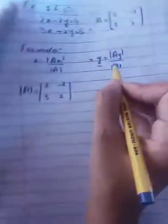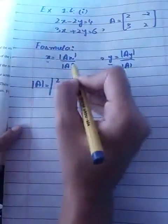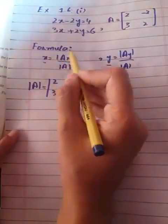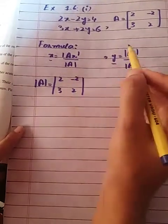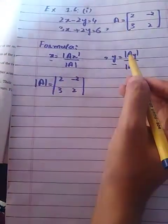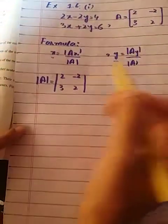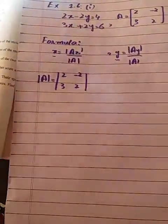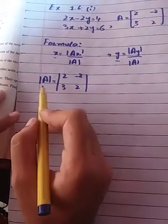Now to solve, you just have to find |A| mod, find |Ax| mod, find |Ay| mod, then substitute the values. So first we'll find out |A| mod.